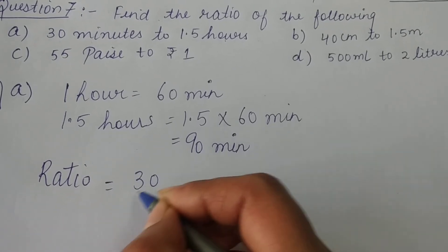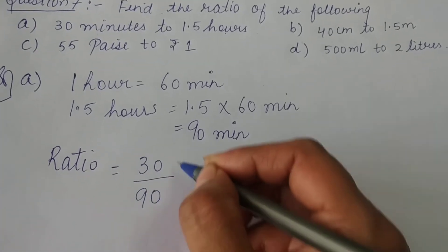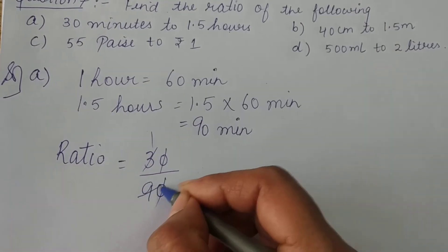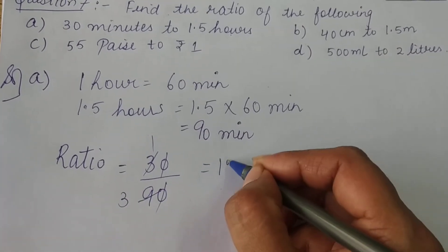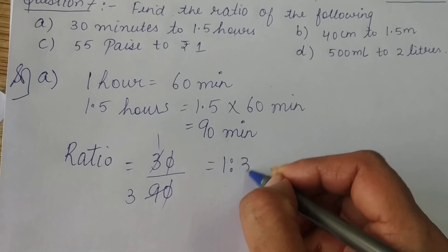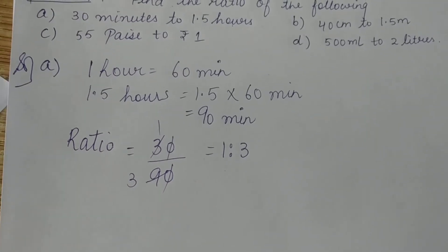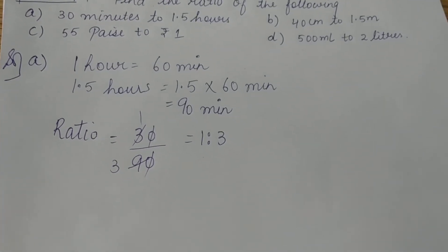The ratio will be 30 upon 90. The zeros cancel out, giving us 3 upon 9. Since 3 ones are 3 and 3 threes are 9, this simplifies to 1 is to 3. So this is the answer for Part A of question number 7.